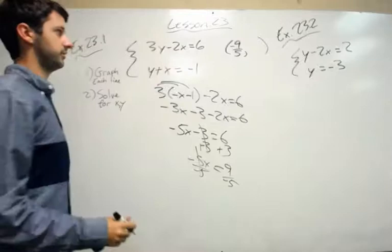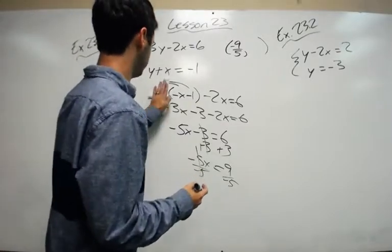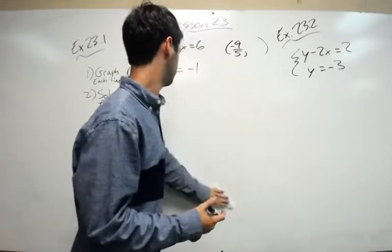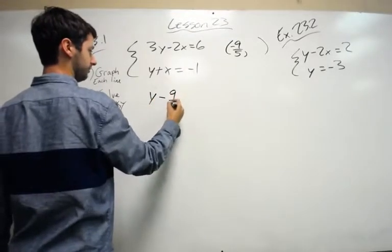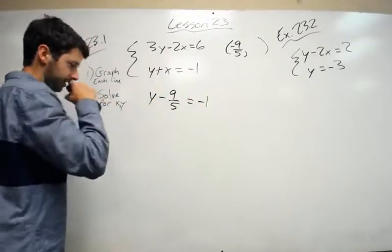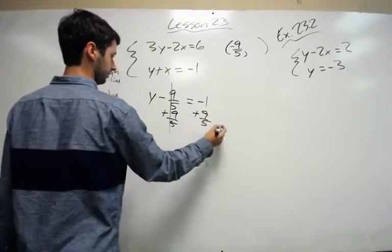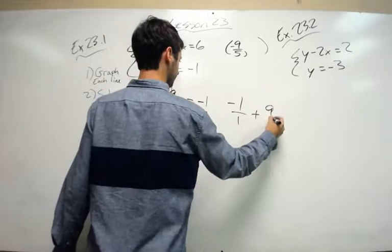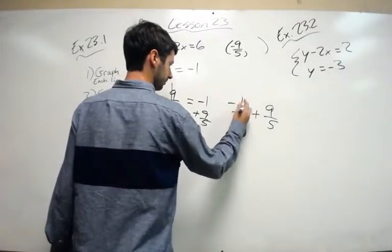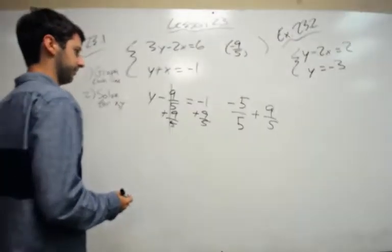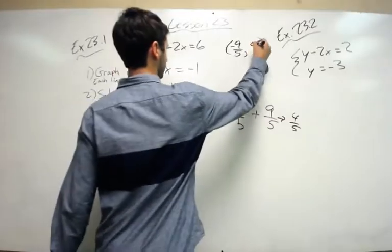We've got x and y values. I'm going to put them in coordinate format. So we've got x. Now let's find y. Plug this in for x. So y minus 9 fifths equals negative 1. Add 9 fifths both sides. The fractions negative 1 over 1 plus 9 over 5. Get common denominators, so I'll make this 5 over 5. Multiply both by 5. So negative 5 plus 9 is 4 fifths. So y coordinate is 4 fifths.